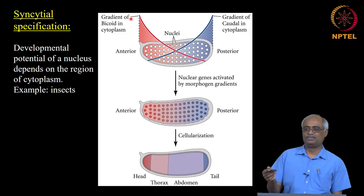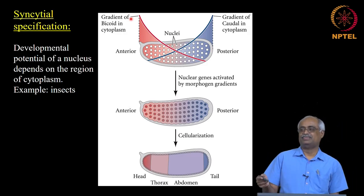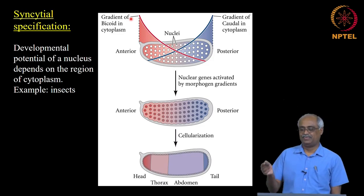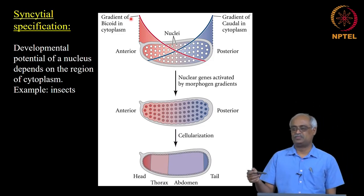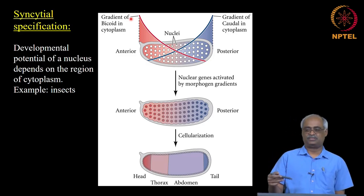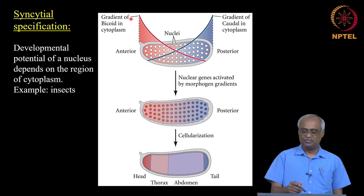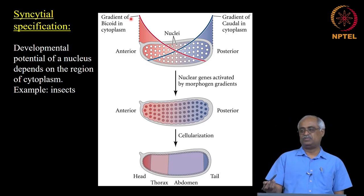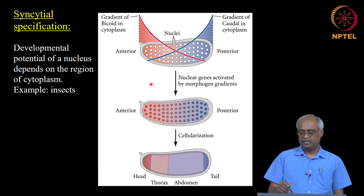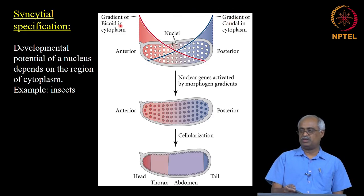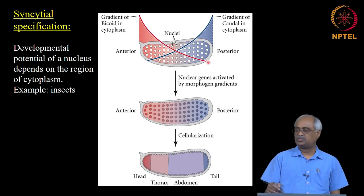An example is the anterior determinant bicoid, which we have encountered before as both a transcription factor and a translation suppressor. Anterior-specifying molecules are induced by bicoid, while caudal mRNA is translationally repressed by bicoid — so caudal is not produced anteriorly but is produced posteriorly. This will be covered in detail when we study Drosophila embryogenesis.